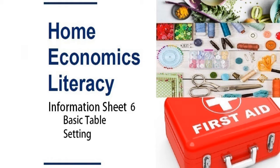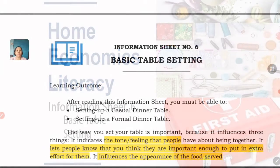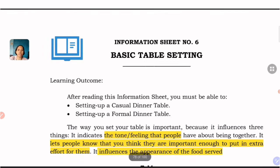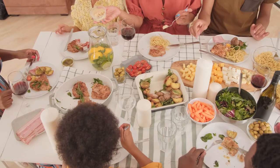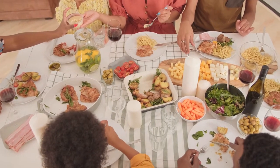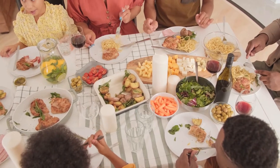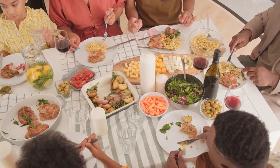Information sheet number six is about basic table setting. Our learning outcomes for this topic are to set up a casual dinner table and a formal dinner table. In our previous lesson, we learned about food and how food brings people together for special or social occasions.